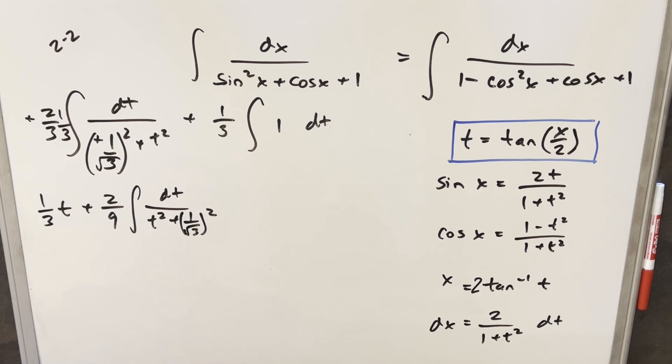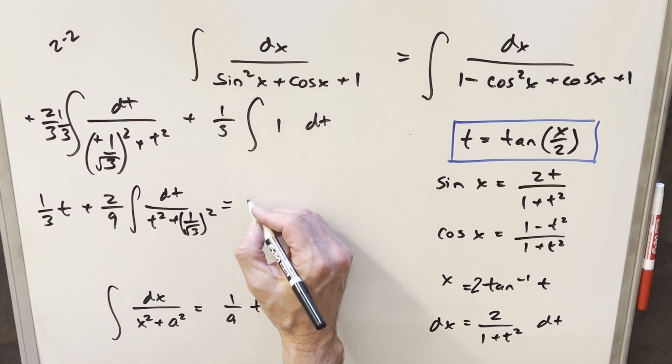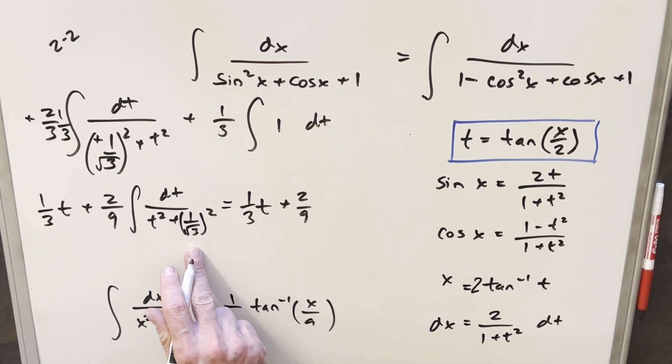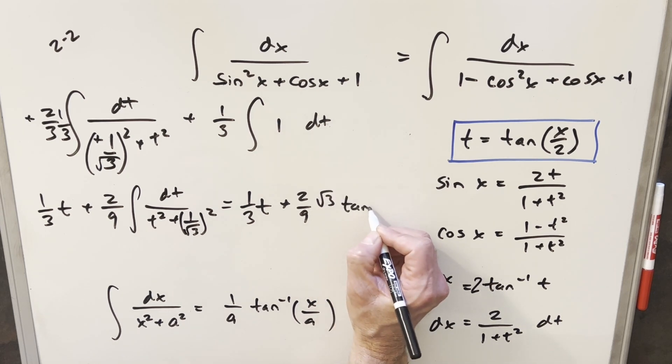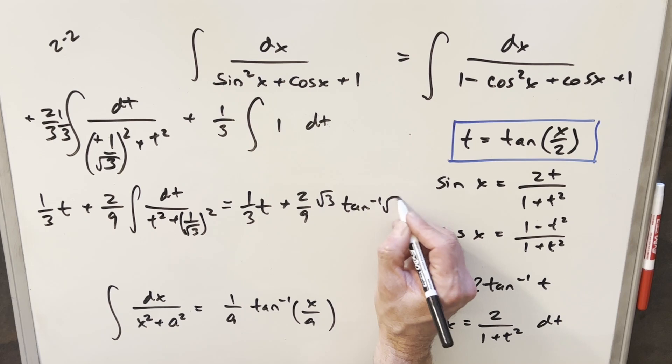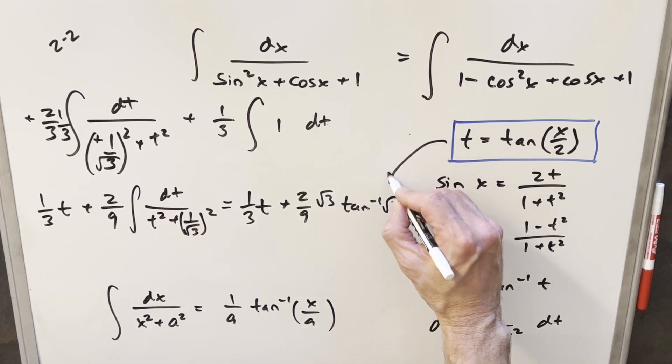We have here our arctan formula. In this case, our a value is just going to be 1 over square root of 3. So let's go ahead. We'll bring forward our 1 thirds t. We still have our 2 9ths out front. Now, if our a value is 1 over square root of 3, here we just want the reciprocal. So we're going to have a square root of 3, and then we're going to have arctan. Because it's in the denominator, we'll have square root of 3t. So now all I need to do is just back substitute for t and then we can finish this off.